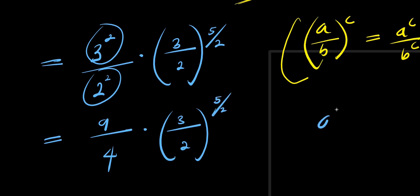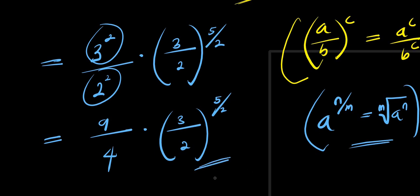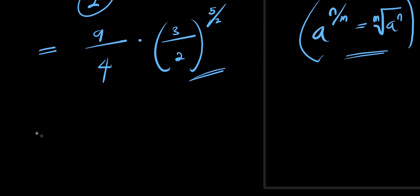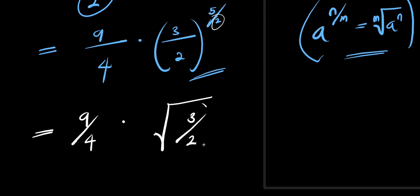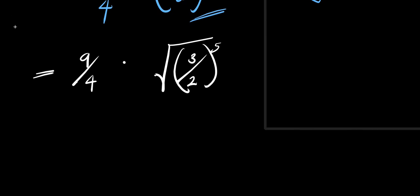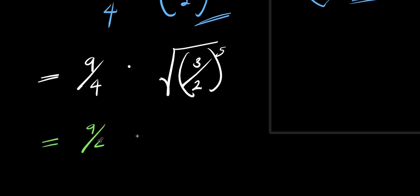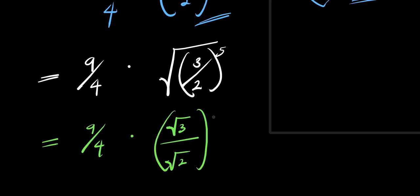Now, if you have a raised to the power of n divided by m, this equals the m-th root of a to the power of n. So we apply this right here — that means we are simply going to have 9 divided by 4, times the square root of 3 divided by 2, raised to the power of 5. So from here, we have 9 divided by 4 times the square root of (3/2), all raised to the power of 5.